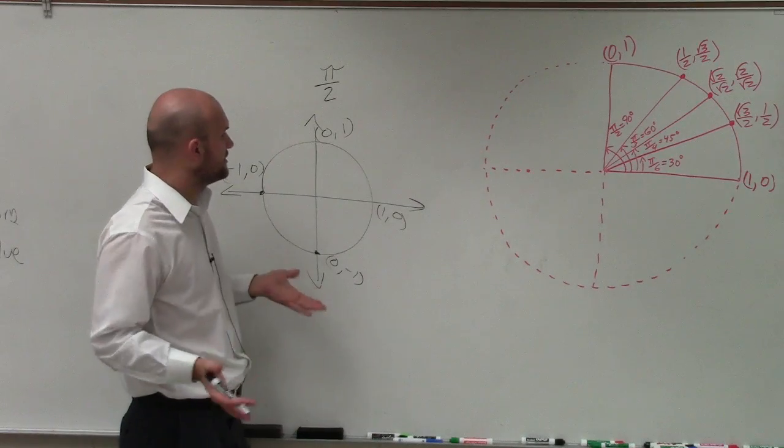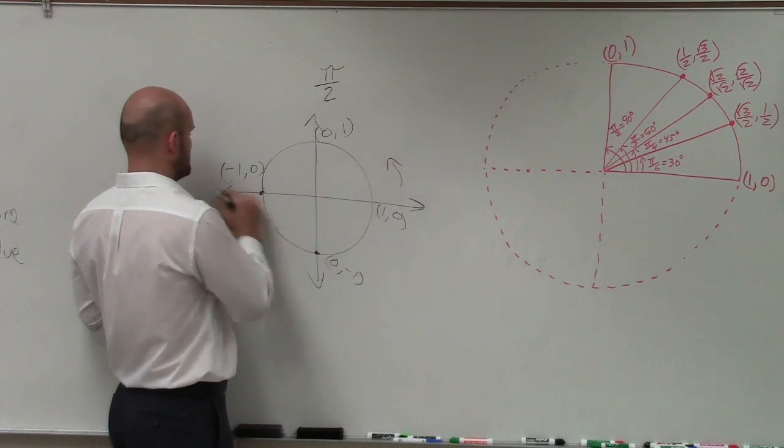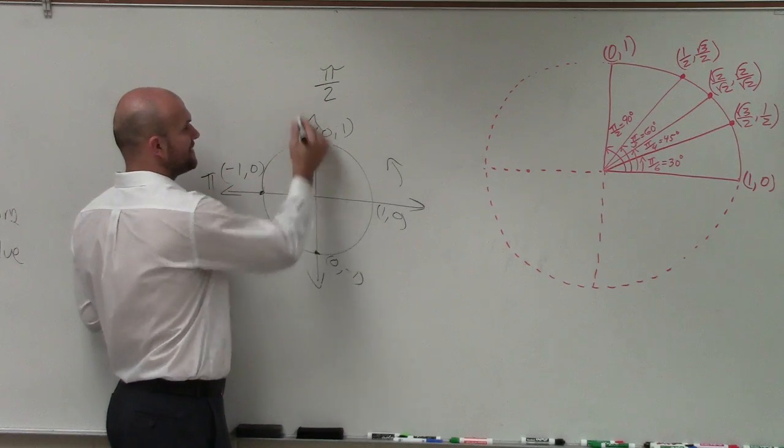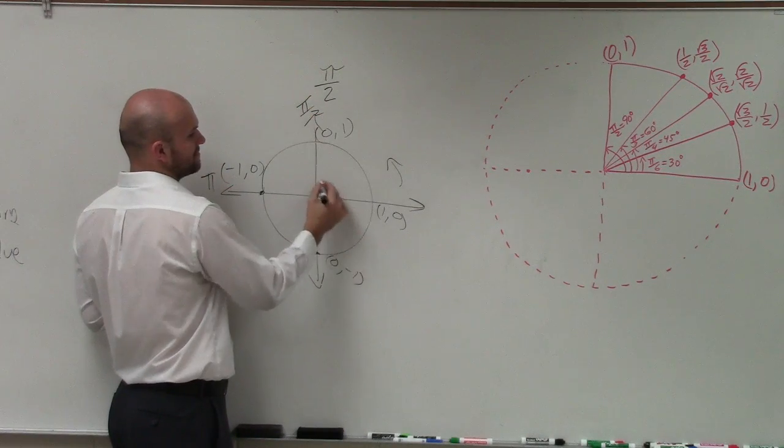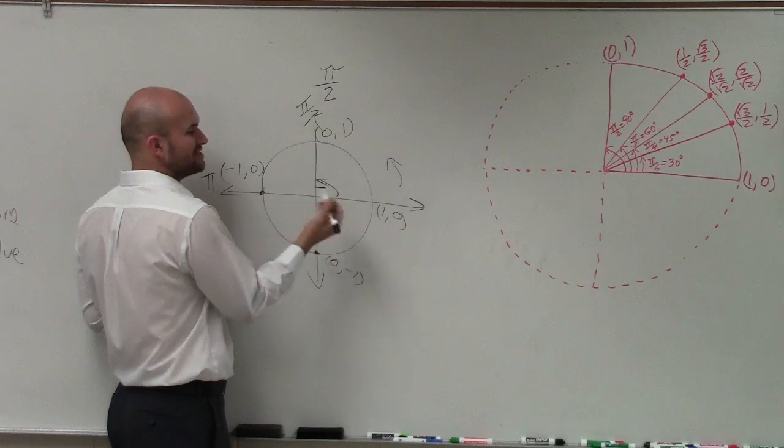So our main important thing is knowing where's pi halves. Well, if we're going in the positive direction, here's pi, so half of that would be pi halves, which is a right angle, which is 90 degrees as well.